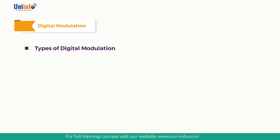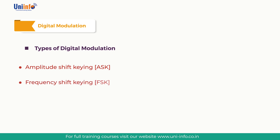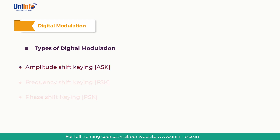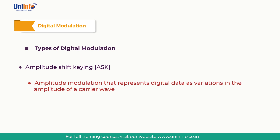Different shift keying methods used in digital modulation techniques are: amplitude shift keying (ASK), frequency shift keying (FSK), and phase shift keying (PSK). Amplitude shift keying (ASK) is a form of amplitude modulation that represents digital data as variations in the amplitude of a carrier wave.